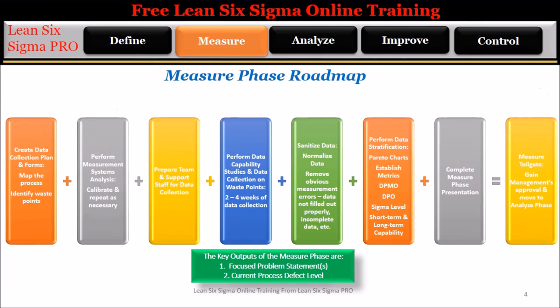The Measure Roadmap is a summary of all of the steps required to complete the measure phase. Step 1: Create data collection plan and forms, map the process, and identify all of the waste points on the process map.